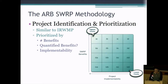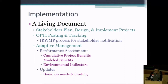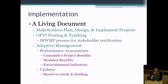It's a living document — stakeholders plan, design, and implement projects. We have OPTI for posting and tracking, and there are a couple of ways to do performance assessments: you can look at the benefits you've quantified and add them up over years to see how you've done, use modeled benefits, or use a tool like the Green Planet tool. You could also use environmental indicators, which you'll hear more about in the next presentation, and we'll be updating the tool based on needs and funding.